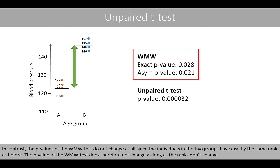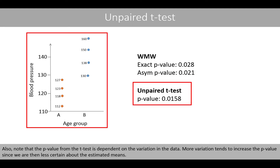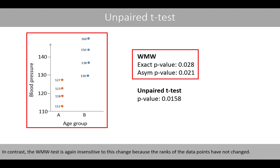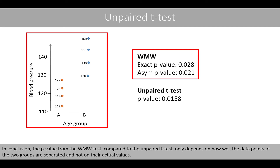The p-value of the Wilcoxon-Mann-Whitney test does not change as long as the ranks don't change. Also, the p-value from the t-test is dependent on the variation in the data — more variation tends to increase the p-value since we are then less certain about the estimated means. In contrast, the Wilcoxon-Mann-Whitney test is insensitive to this change because the ranks of the data points have not changed. In conclusion, the p-value from the Wilcoxon-Mann-Whitney test only depends on how well the data points of the two groups are separated, not on their actual values.